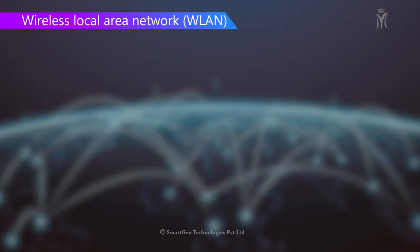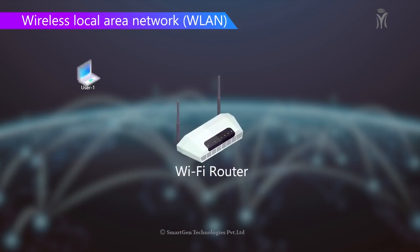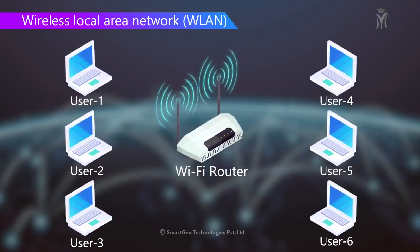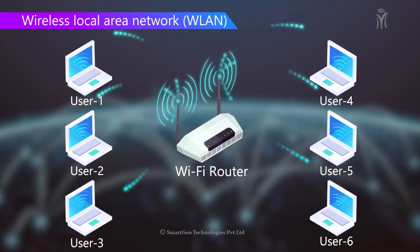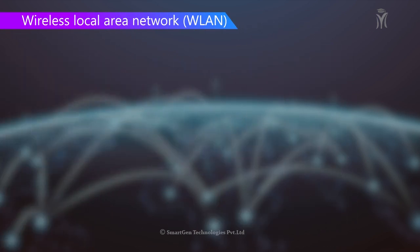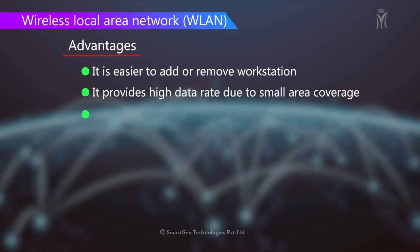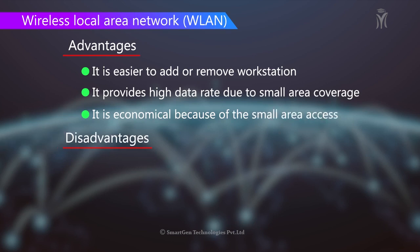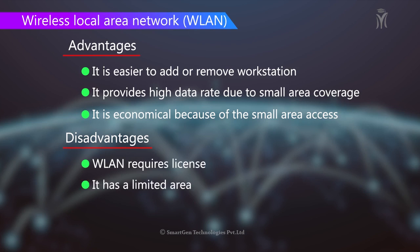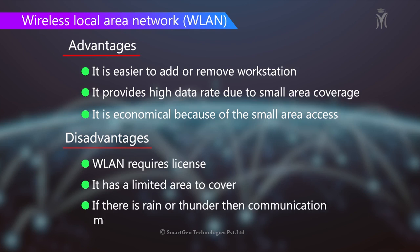Wireless Local Area Network (WLAN) links two or more devices over a short distance and connects users to the internet. Advantages: it is easier to add or remove workstations, it provides a high data rate due to small area coverage, and it is economical. Disadvantages: wireless LAN requires a license, has a limited area to cover, and communication may be interfered with by rain or thunder.